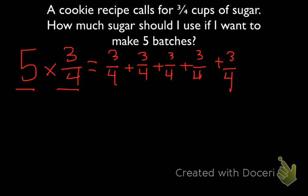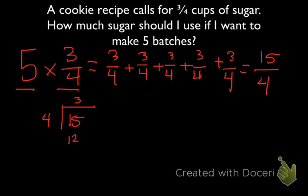What we'll see is that if we use the old way, we would add our numerators together. So 3 plus 3 plus 3 plus 3 plus 3 plus 3 is going to be 15, and then we divide that by our denominator of 4. So that becomes 15 divided by 4. 4 goes into 15, 3 times — 4 times 3 is 12. 15 minus 12 is going to be 3. So our mixed number for this is going to be 3 and 3 fourths.